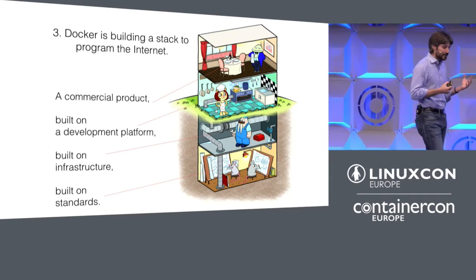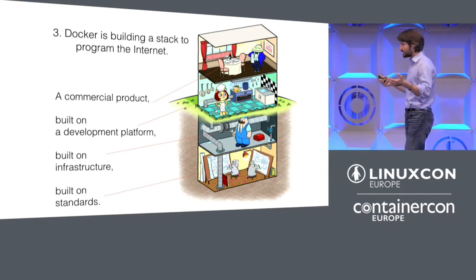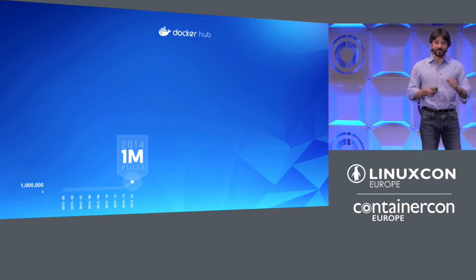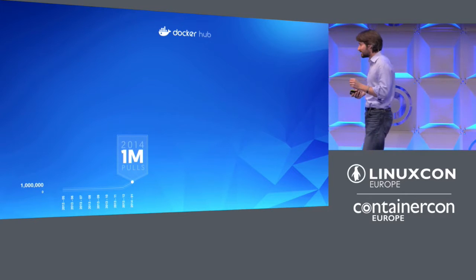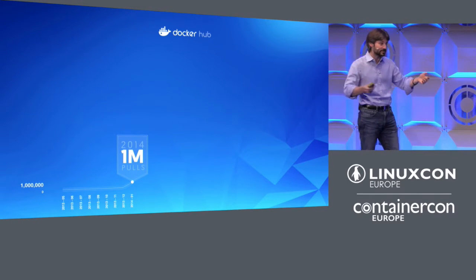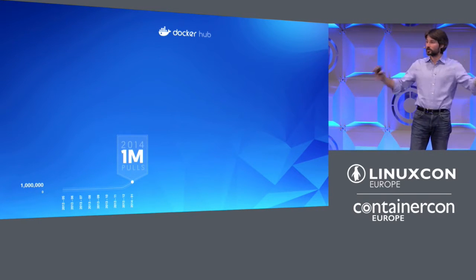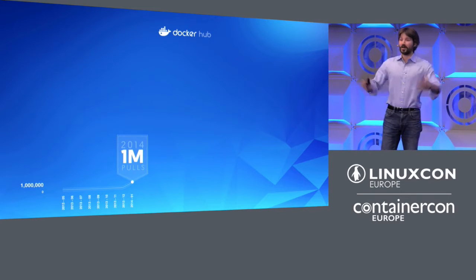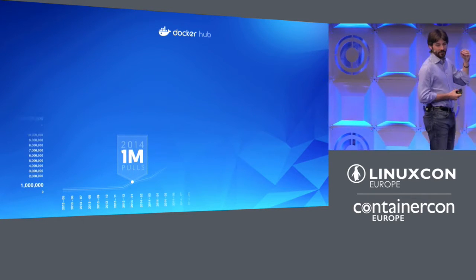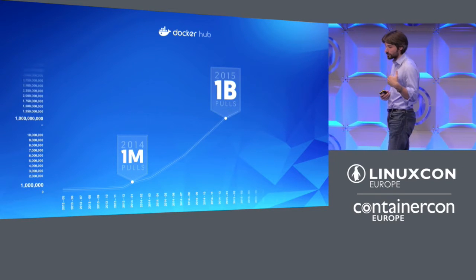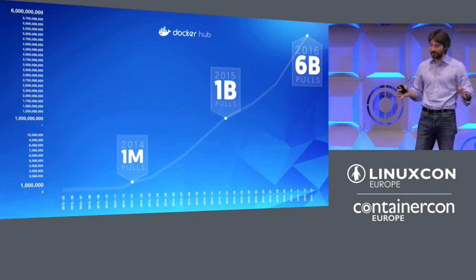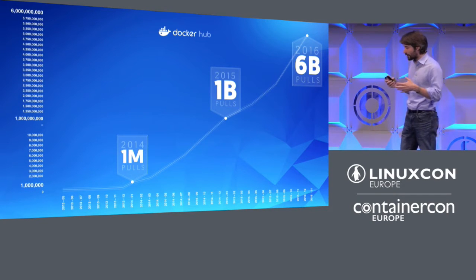The result of all that is a product, Docker, that a lot of people use, and it's still growing fast. To give you a sense: we measure the number of pulls — containers downloaded from Docker Hub, the place where anyone can share and consume containers. In 2014 we reached a million pulls, in 2015 a billion pulls, and in 2016 we passed six billion pulls. We're currently increasing that number by one billion every six weeks. So by any reasonable measure, Docker is something that a lot of people use.